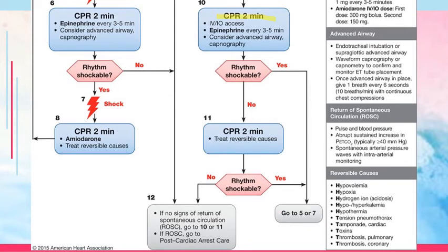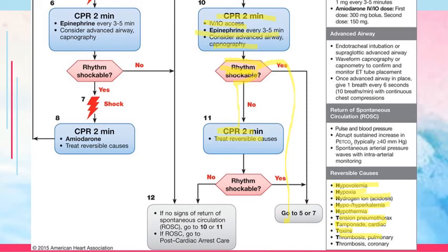For non-shockable rhythms, continuously do CPR and through IV or intraosseous access give epinephrine every three to five minutes. Capnography is used to evaluate the effectiveness of the advanced airway by detecting carbon dioxide levels. If the rhythm becomes shockable, proceed to the shockable steps — administer shock then immediately do CPR. If the rhythm is still not shockable, do CPR and treat reversible causes. There are five H's and five T's of reversible causes: hypovolemia, hypoxia, hydrogen ion problems (acidosis), potassium problems, hypothermia, tension pneumothorax, cardiac tamponade, toxins, pulmonary thrombosis, and coronary thrombosis.